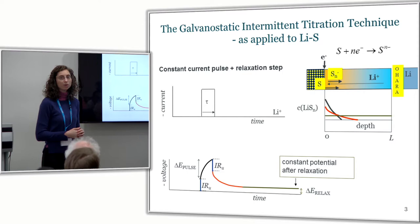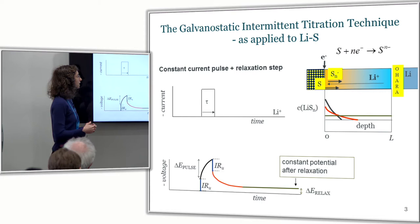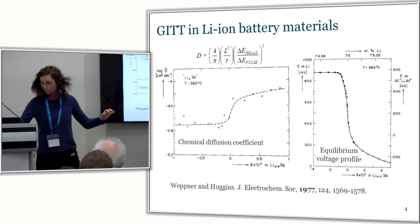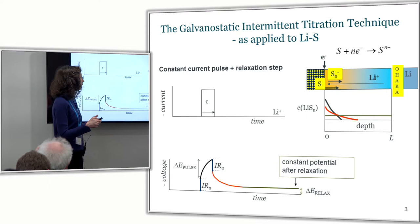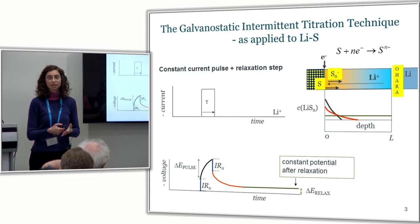More or less, we have the same thing with lithium-sulfur batteries. We will also apply a current pulse and then a relaxation, and we will have the reduction of sulfur producing some polysulfide species. The main difference is that now the concentration change takes place within the electrolyte, whereas before, in lithium-ion batteries, the concentration change takes place in the electrode. This technique is very useful to get the value of the resistance through the electrolyte, and Matterlacy has used it a lot to study the evolution of different cells.